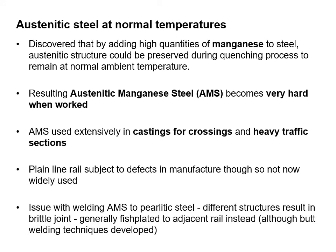It's been discovered that by adding high quantities of manganese to steel, austenitic structure could be preserved during quenching processes. The resulting austenitic manganese steel, or AMS, becomes very hard when worked. AMS is used extensively in castings for crossings and heavy traffic sections. Plain line rail is subject to defects in manufacture, so it's not now widely used. The issue with welding AMS to pearlitic steel is that the different structures result in a brittle joint — it's generally fish-plated to adjacent rail instead, although butt welding techniques have been developed.